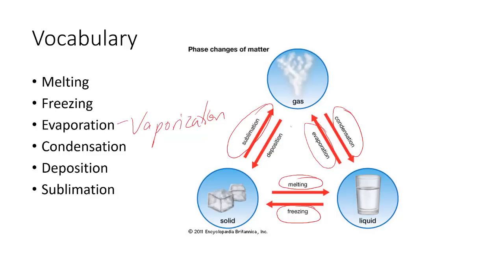You can also go from solid directly to gas — that's called sublimation — and from gas directly to solid, which is called deposition. This happens with carbon dioxide at sea-level pressure. In theaters, a fog machine uses dry ice, which is solid carbon dioxide. When you warm it or add water to it, it goes directly to gas without passing through the liquid phase.